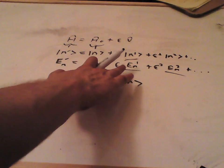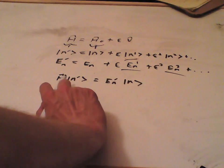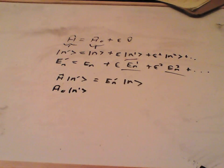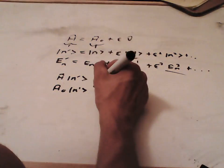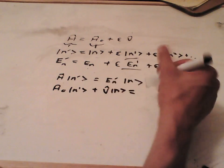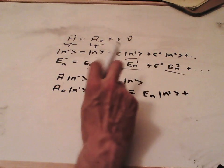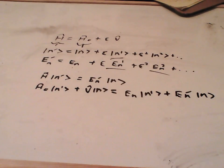So, if we equate first order terms, we equate terms of this expression that are order epsilon. So, from here we are going to get H naught n1. So, that's that, because that term is going to be order epsilon in this expression here. We're also going to get another term. We're going to get V n. And on this side we are going to get En n1 plus En1 times by n.